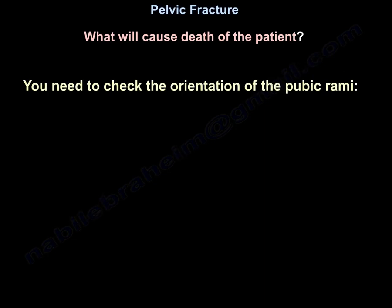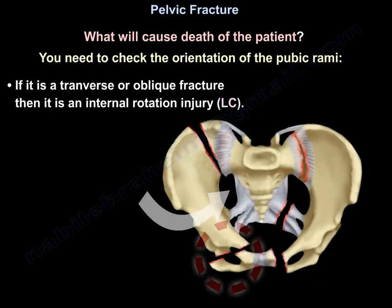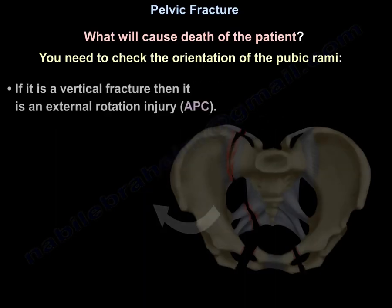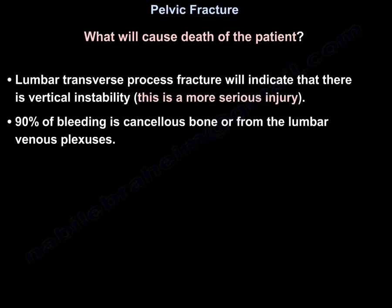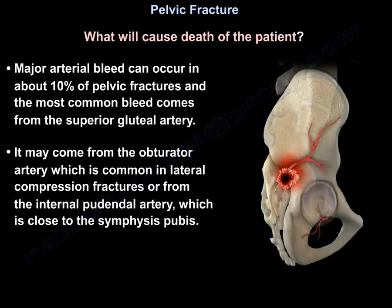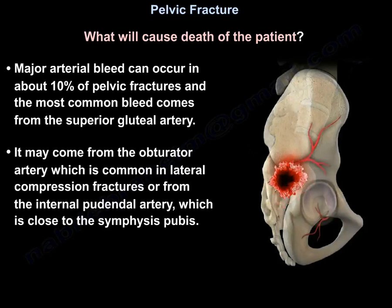Check the orientation of the rami: if it is transverse or oblique, it is an internal rotation and lateral compression - check for head injury. If it is vertical, it is external rotation and anteroposterior compression - watch for bleeding. Lumbar transverse process fracture indicates vertical instability, which is a more serious injury. 90% of bleeding is from cancellous bone or from the lumbar venous plexus. Major arterial bleed occurs in about 10% of pelvic fractures. The most common bleed comes from the superior gluteal artery, or from the obturator which is common in lateral compression, or from the internal pudendal artery which is close to the symphysis pubis.